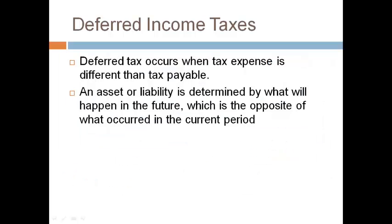Let's talk more about how to determine if you have a deferred tax liability or a deferred tax asset. Deferred tax occurs when tax expense is different than tax payable. When it is different in the current period because of temporary differences, it will also be different in the future, because the two have to be equal at some point. Whether the difference creates an asset or liability is determined by what will happen in the future, which will be opposite of what happens in the current period.